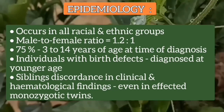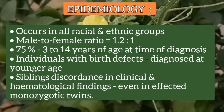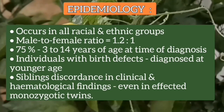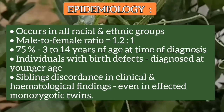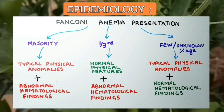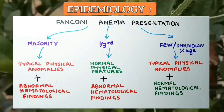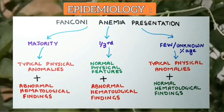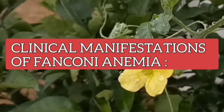Fanconi Anemia occurs in all racial and ethnic groups. The male to female ratio is about 1.2:1, and 75% of patients are 3 to 15 years of age at the time of diagnosis. However, individuals with birth defects are diagnosed at a younger age. There can be sibling discordance in clinical and hematological findings even in affected monozygotic twins. Majority of patients at diagnosis have both typical physical anomalies and abnormal hematological findings, though one-third may have normal physical features but abnormal hematological findings.